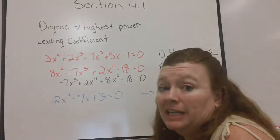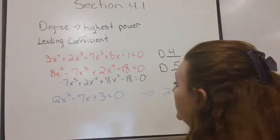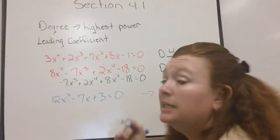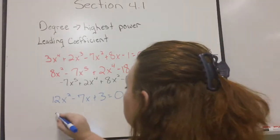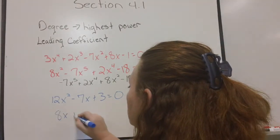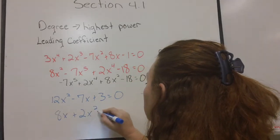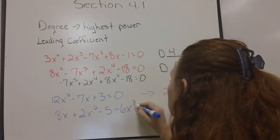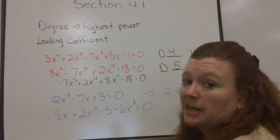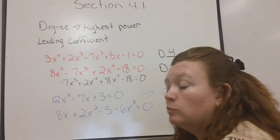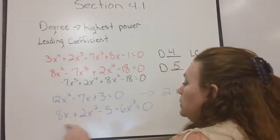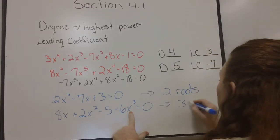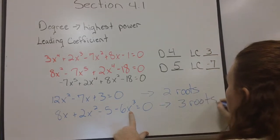Later on, we'll get into how to find what those roots are, but for right now, I just need to be able to identify how many roots. So, again, if it's not in the right order, that doesn't really matter. You can rewrite it in the right order, or you can look through it and say, there's my highest power. So it has three roots.